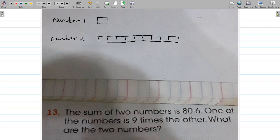When we add all these portions up, the sum of these portions equals 80.6. All right, now we need to find the values of the single portion and the total amount of the second number.